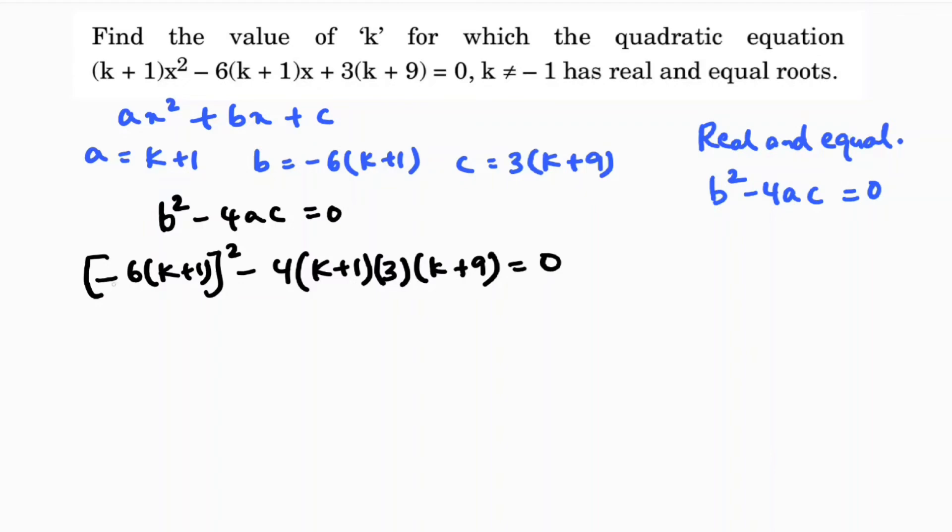Expanding: 36(k+1)² equals 36(k+1)² (keeping it factored), and we have 12(k+1)(k+9) on the other side, giving us 36(k+1)² - 12(k+1)(k+9) = 0.